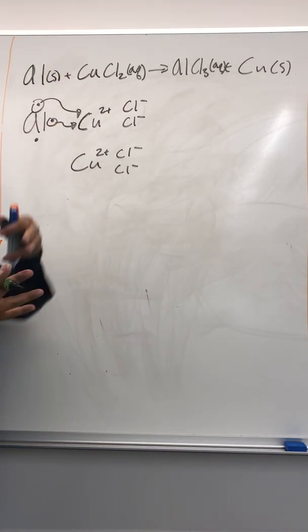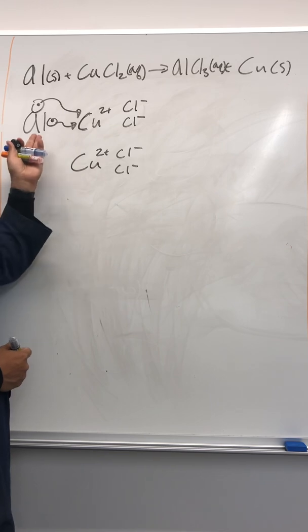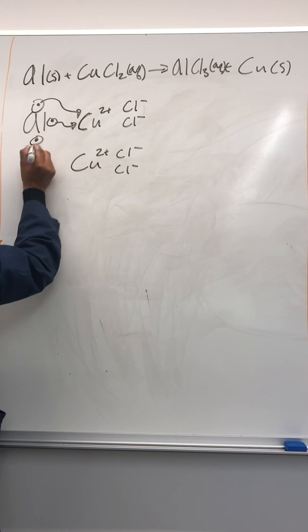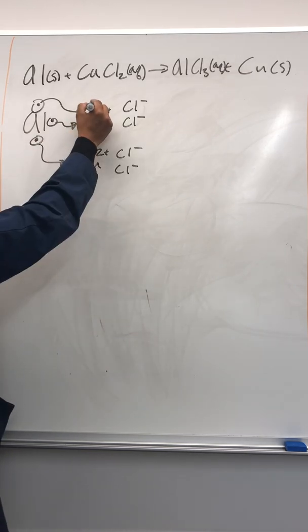And really, when we have it in solution, we have zillions of them. So they're there. If there's an electron to give, there's a copper chloride right next door ready to get it. So this one here gives it here, gives one electron there. So maybe I'm going to draw